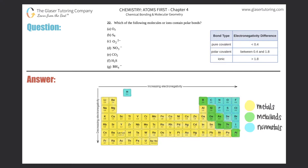Question 22 asks which of the following molecules or ions contain polar bonds. We need to figure out which ones out of these seven contain polar bonds, which goes back to electronegativity. For a molecule or ion to contain polar bonds, it must have a polar covalent bond type, meaning the electronegativity difference between the two elements must be between 0.4 and 1.8.